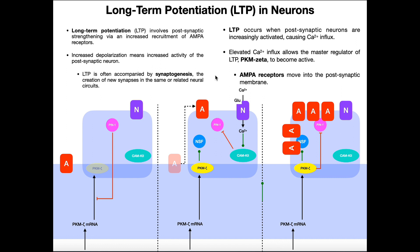So how do we apply long-term potentiation? Suppose there's a concept in a class that you're taking and you really need to learn it — the instructor told you it's going to be 50% of the exam and also on the final exam. You need to be able to access it quickly and efficiently, almost like thinking about your brain as a bunch of file cabinets. If that concept represents some neural circuit, then in order to access it efficiently, you're going to have long-term potentiation of the neurons in that circuit.